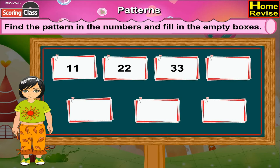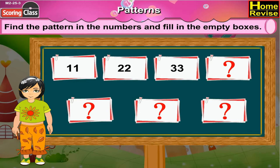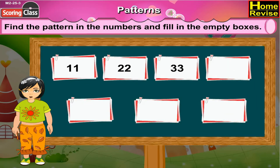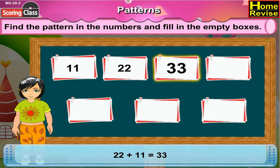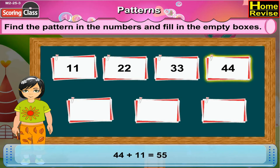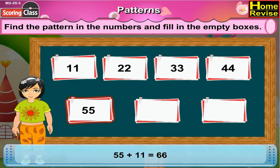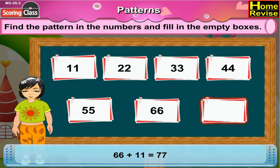Now the last number strip: 11, 22, 33 followed by 4 empty boxes. If you notice the number strip, you get the succeeding number by adding 11 to the previous number. As in, 11 plus 11 is 22. 22 plus 11 is 33. Now next is 33 plus 11, that is 44. The next one is 44 plus 11, that is 55. Next is 55 plus 11, that is 66. And the last one is 66 plus 11, that is 77.